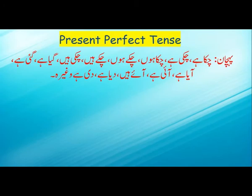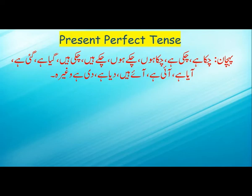In Urdu, sentences that end with the following words are known to be present perfect tense: chuka hai, chuki hai, chuka hoon, chuke hoon, chuke hai, chuki hai, gaya hai, gai hai, aya hai, aai hai, aaye hai, diya hai, di hai, and so on. All these are the identifications of present perfect tense.